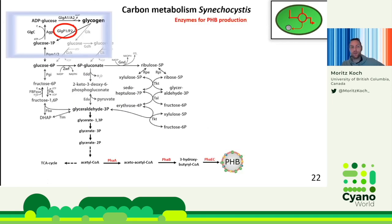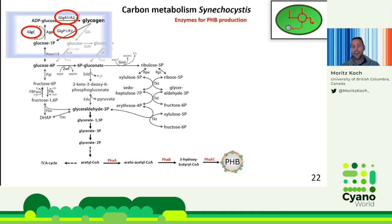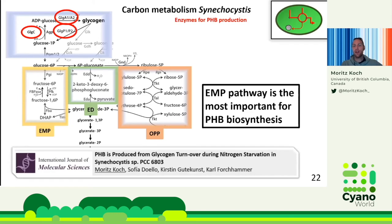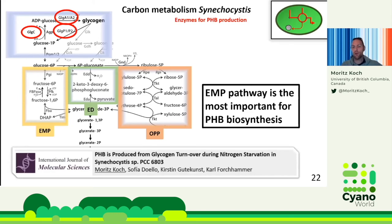Further experiments with glycogen synthases GlgA1, GlgA2 and the GlgC enzyme all pointed in the same direction. Once we were confident both biopolymers were interconnected, we investigated which carbon pathway links them. Synechocystis has three main carbon pathways: the EMP pathway (classic glycolysis), the Entner-Doudoroff pathway, and the oxidative pentose phosphate pathway. By investigating knockout strains of each, we were able to show that the EMP pathway is by far the most important pathway for PHB biosynthesis.